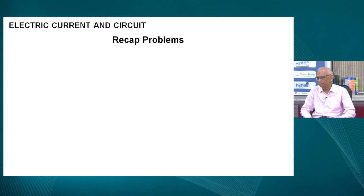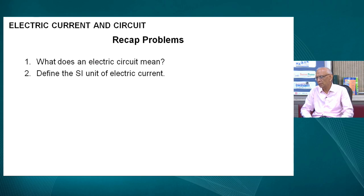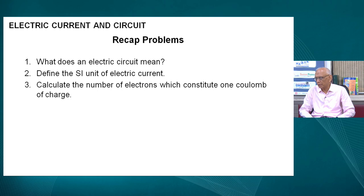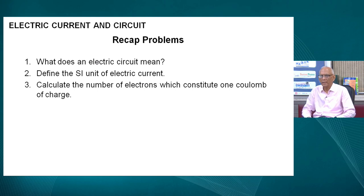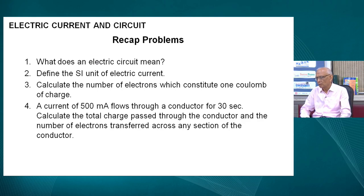Here are a few recap problems for you. First: what does an electric circuit mean? Second: define the SI unit of electric current, ampere. Third: calculate the number of electrons which constitute one coulomb of charge — the charge on one electron is given as 1.6 × 10 to the power minus 19 coulomb. We also have another problem: a current of 500 milliampere flows through a conductor for 30 seconds — calculate the total charge passed through the conductor and the number of electrons transferred.